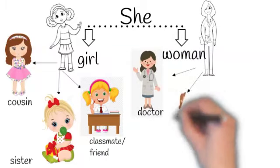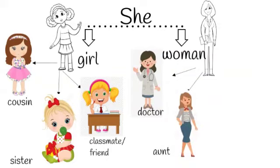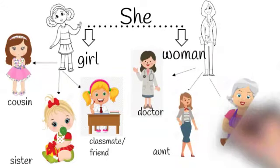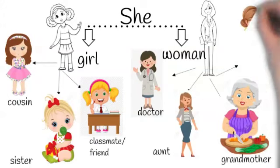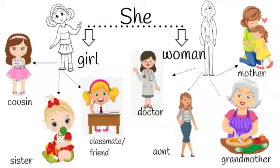This woman is a doctor, so we will say she is a doctor. For your aunt, you will also use she — she is my aunt. For grandmother, because she is a woman, we will say she is my grandmother. Your mother is also a woman, so for your mother we will use she loves me. Always remember, when we are talking about a girl or a woman, we will always use she for them.